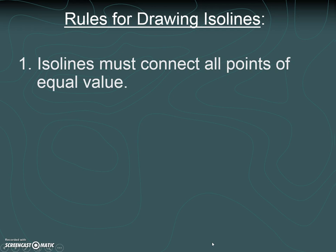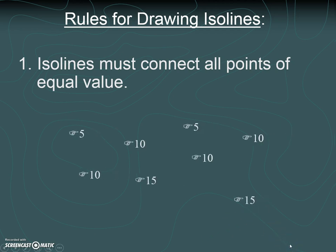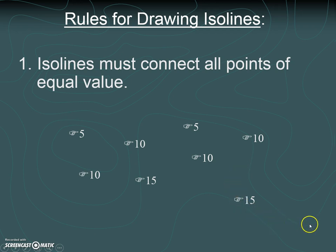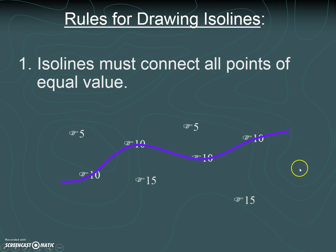Now I want to go over some of the rules for how we create field maps and draw iso lines. The first rule is that when you draw an iso line, you have to connect all of the points that have an equal value. So if you were given data and asked to draw the iso line for the value of 10, you would need to make sure your iso line went through all of the 10s — every single 10 would have to be connected by that line.